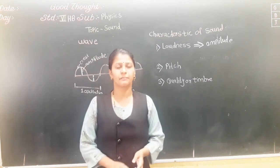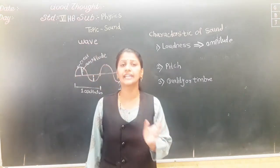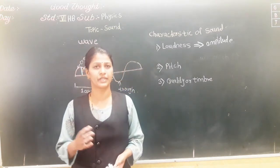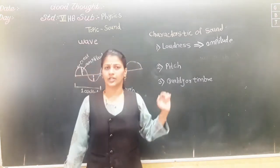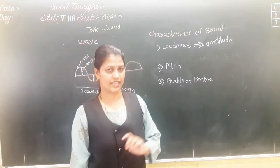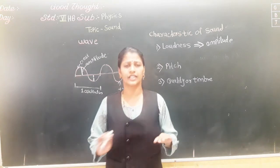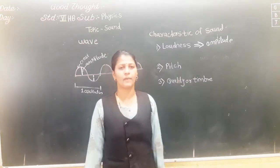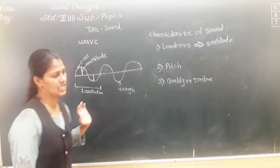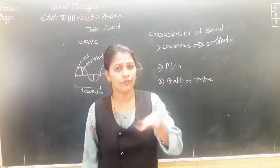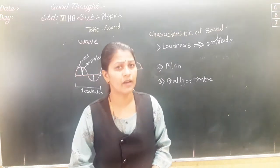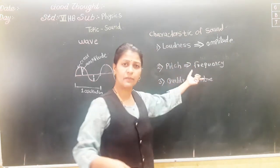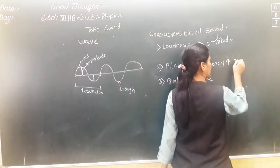Next is pitch. Pitch is what distinguishes between a shrieking and a deep sound — for example, a drum versus a whistle. The drum has a smooth, lower sound, while a whistle has a rough, higher sound. Pitch depends on frequency. Greater the frequency, greater will be the pitch. If the frequency is small, then the pitch will be smaller.